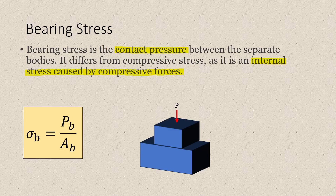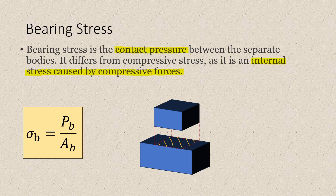Let's go to the basic definition of bearing stress. Let's say we have two bodies in contact with each other. If this top cube is placed against the bottom cube, there will be an internal stress at the junction point of these two objects. Usually in strength of materials, we are interested in the bearing stress in bolt connections.